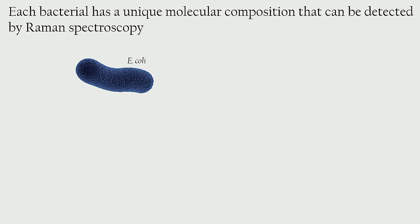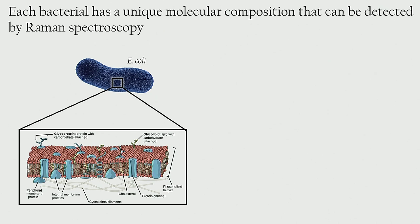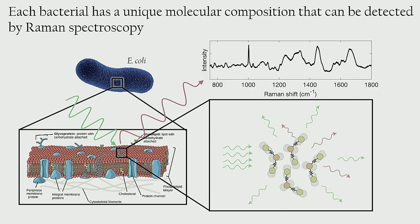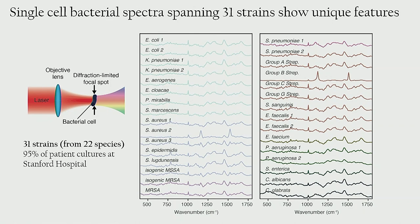The idea is to use a technique called Raman scattering. Here's an example cell — E. coli — and if we zoom in, it has a cell membrane comprised of many different proteins. When we illuminate this with light, say green light, all of those proteins and molecules in the cell membrane are going to be vibrating. Those vibrations either add or subtract energy to that incident green light, so we wind up getting red photons or blue photons out. That's what we read out in a Raman scattering spectrum — the Raman shift is basically a measure of the energy added to or subtracted from the incident color of light. This Raman scattering provides a fingerprint of the bacteria because each bacterial species and strain has a unique molecular composition that we can use for identification.